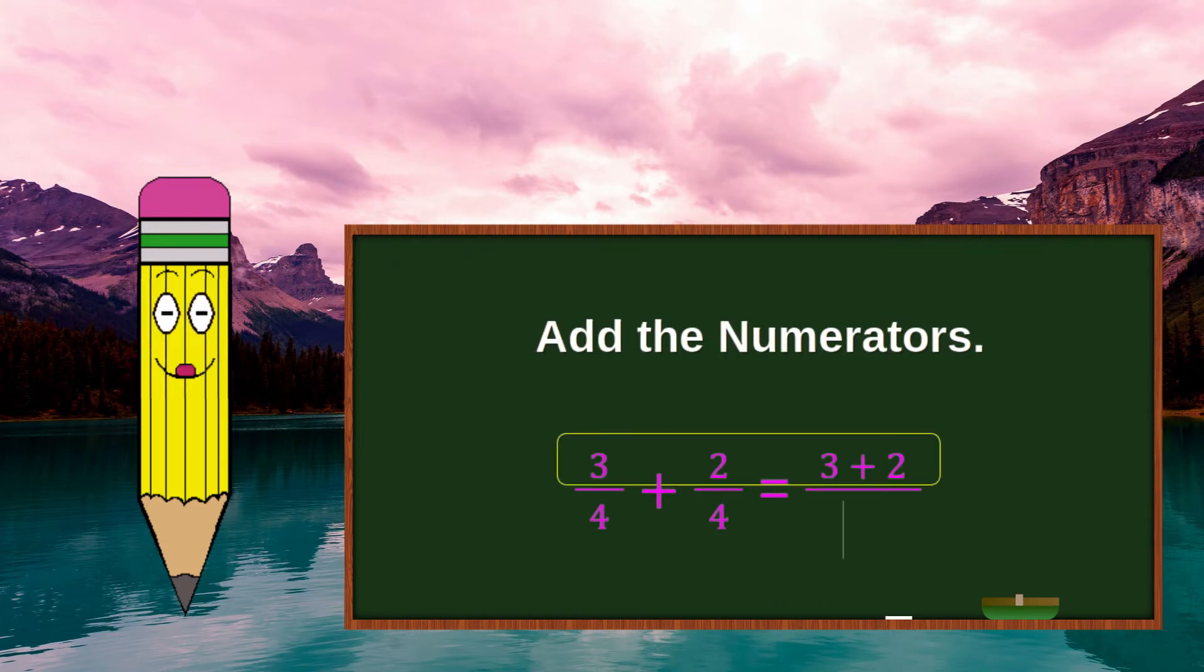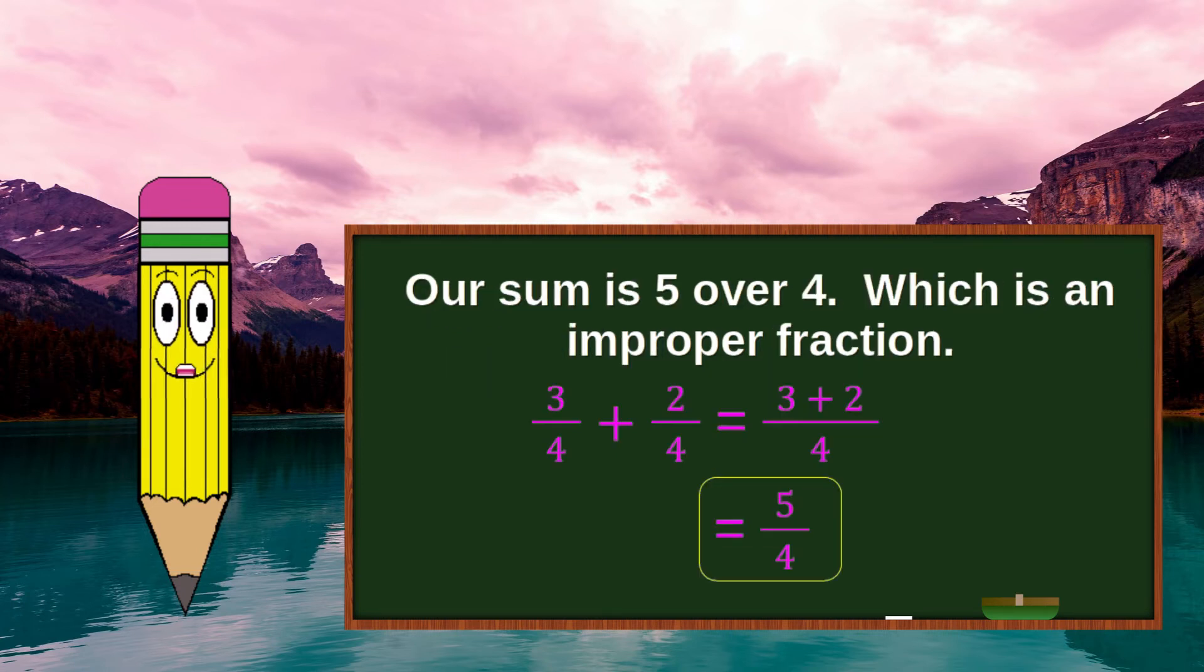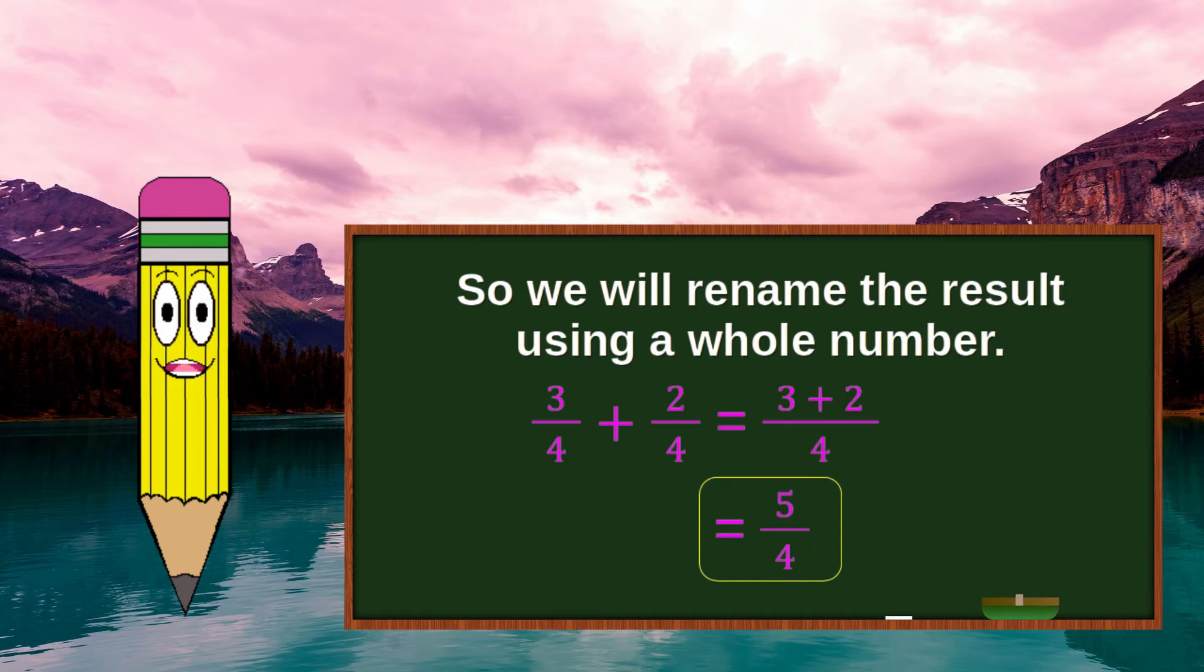Add the numerators. Since the denominators are the same, the denominator of the answer stays the same. Our sum is 5 over 4, which is an improper fraction, so we will rename the result.